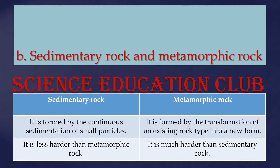Differences between sedimentary rock and metamorphic rock: Sedimentary rock is formed by the continuous sedimentation of small particles. Metamorphic rock is formed by the transformation of an existing rock type into a new form. Sedimentary rock is less hard than metamorphic rock, and metamorphic rock is much harder than sedimentary rock.